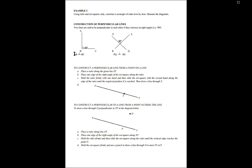We read this as AB is perpendicular to BC. This is the symbol that represents perpendicular. The next figure shows two lines PQ and RS intersecting at 90 degrees — that is, they are perpendicular to each other — and it is read as PQ is perpendicular to RS.